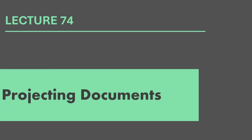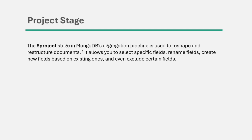In this lecture, we are going to learn how to project data in the aggregation framework. We have already learned about projection and how we can project data with the find method. But with the aggregation framework, projection becomes more powerful. The project stage in MongoDB aggregation pipeline is used to reshape and restructure documents. It allows you to select specific fields, rename fields, create new fields based on existing ones, and even exclude certain fields.